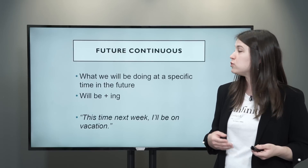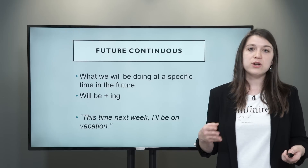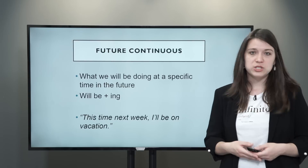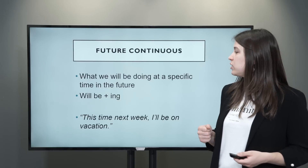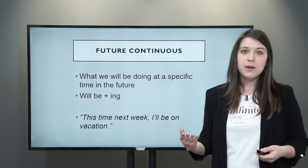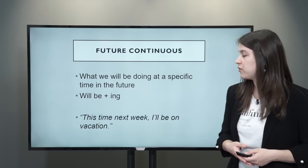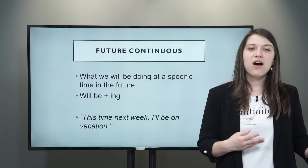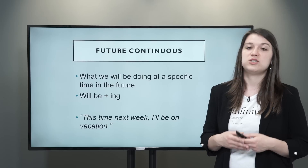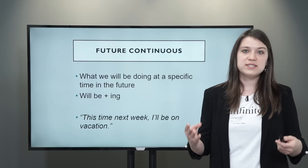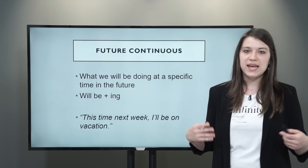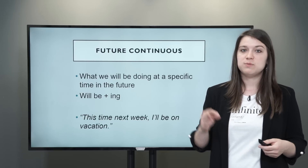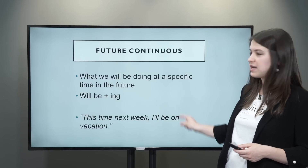Future continuous — we use the future continuous to talk about an ongoing action in the future, something that we know we will be doing at a specific time. We use will be plus the verb with -ing. For example: this time next week, I will be on vacation. The vacation is an ongoing action — it could be a few days or a week — and you specify the time by saying this time next week.